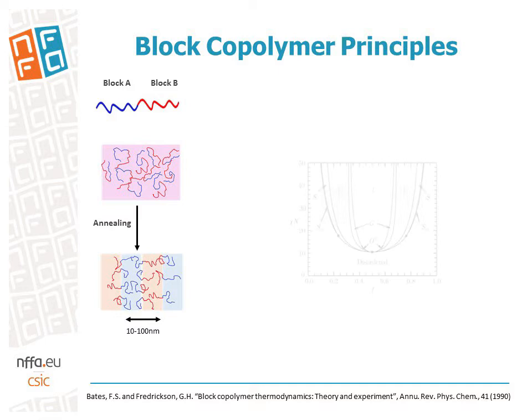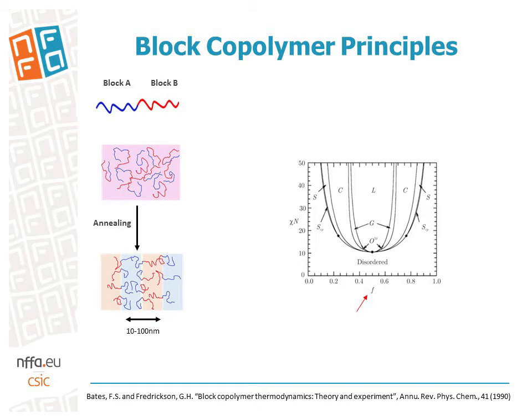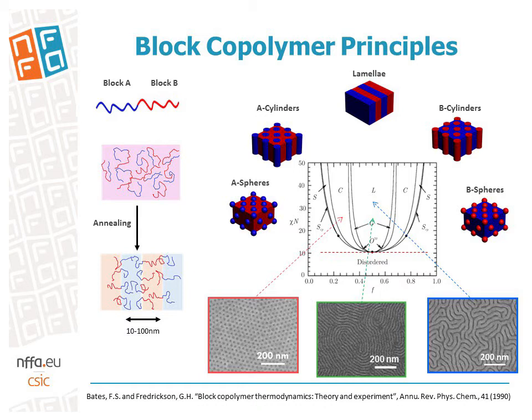The parameters controlling the self-assembly are mainly two: the volume fraction of the two blocks, F, and the segregation strength, given by the product of N (number of monomers) and the Flory-Huggins parameter, chi. If the segregation strength is over a critical value, they will be able to phase-separate and form different nanostructures depending on the volume fraction of each block, such as spheres, cylinders, and lamellae.